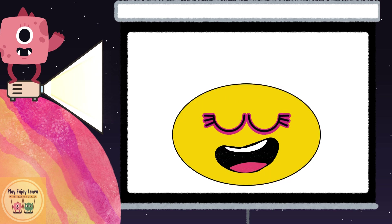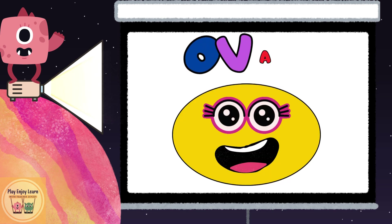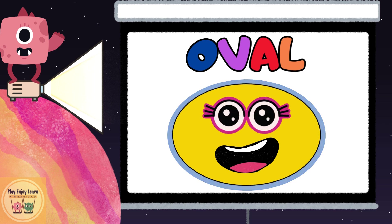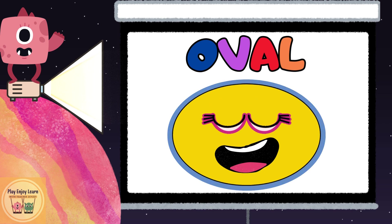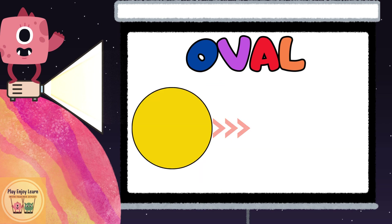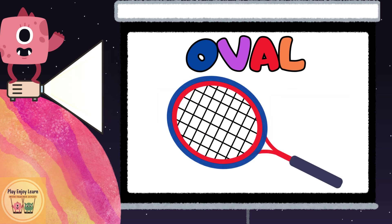The last shape we will learn is the oval. An oval has no sides and no corners. You can think of an oval like a stretched version of a circle. Here are some examples of an oval.